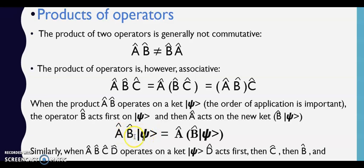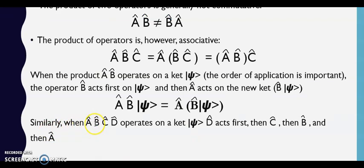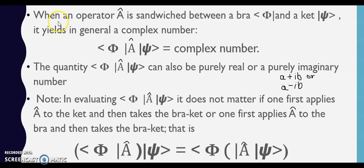Ye pehle hum A B dono operator ko ket psi pe operate kiye toh ket psi ke just bagal mein jo operator hai woh us pe operate karega. Uske baad ye dono milke ek aur naya ket operator ban jayega, uske baad phir A us pe act karega. Similarly when operator A B C D operates on a ket psi, D acts first then C, then B and then A.